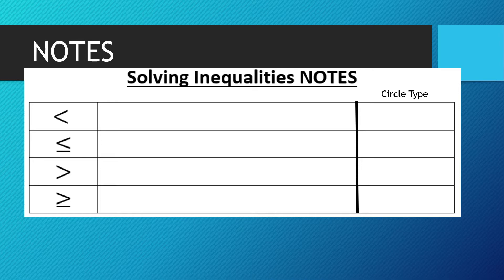That first symbol pointing to the left is a less than symbol. An example: x is less than 2. So all the numbers below 2 on the number line — it does not include 2. When we graph that, that is an open circle on the graph.